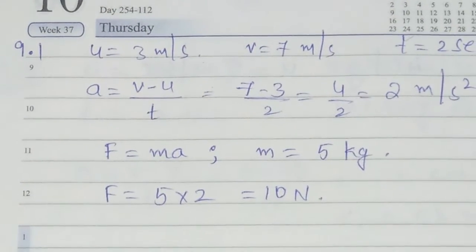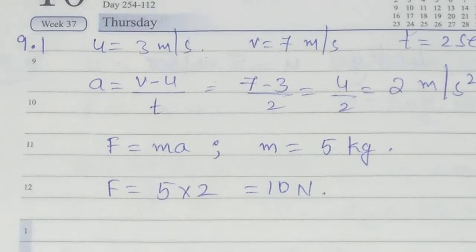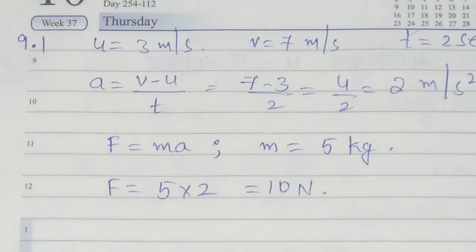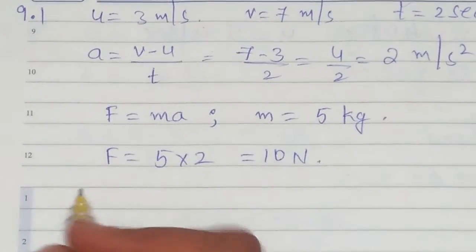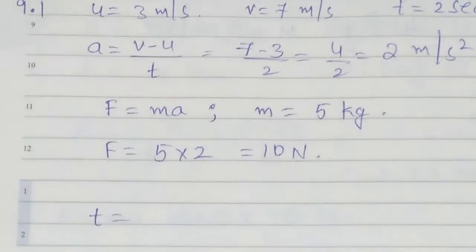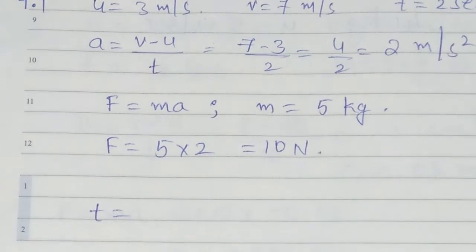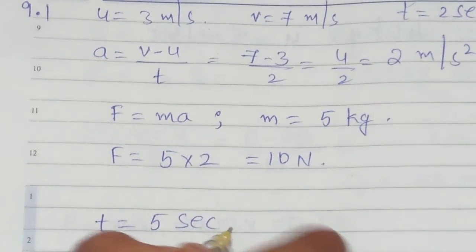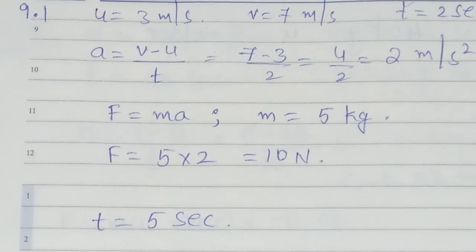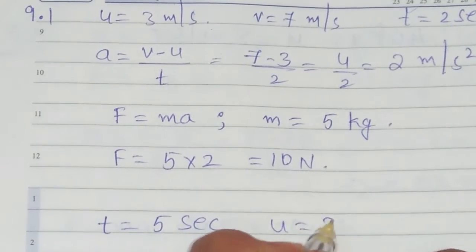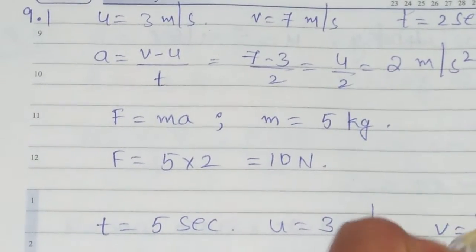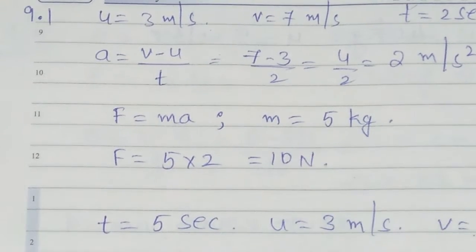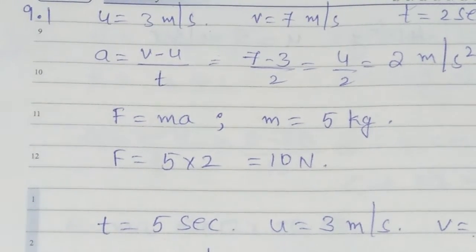Then we have to find out: if the force was applied for a duration of 5 seconds, what would be the final velocity of the object? Here time is given as 5 seconds. And initial velocity is given in the question as 3 meters per second. V value we have to find out, and A value we already got, that is 2 meters per second square.